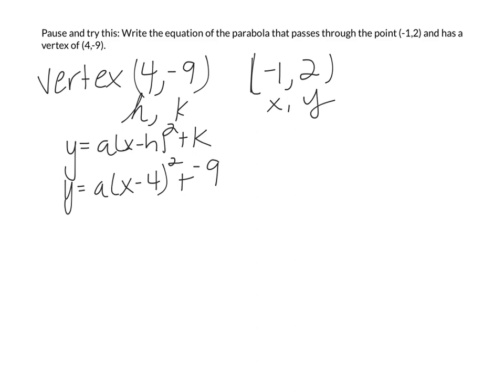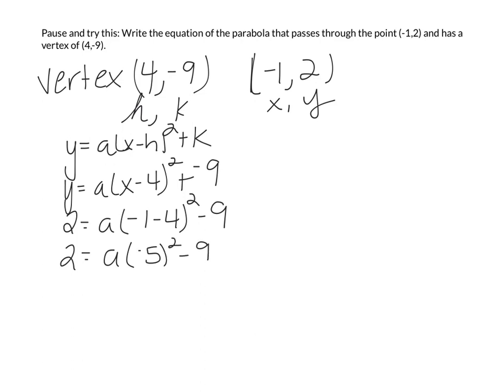Vertex form is y equals a times (x minus h) squared plus k. First I plug in my vertex: a times (x minus 4) squared minus 9. Now I plug in my x and y — y is 2: 2 equals a times (negative 1 minus 4) squared minus 9. Using order of operations, inside the parentheses: negative 5 squared minus 9. That gives positive 25a minus 9 equals 2.